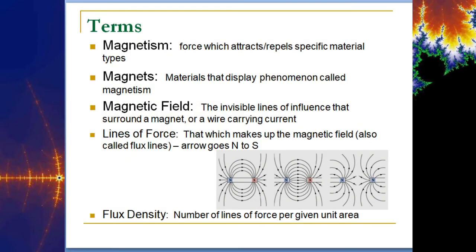Let's get a couple of terms out of the way right off the bat. The first one is magnetism, which is essentially the principle upon which all of these things work. It's a force which attracts or repels specific material types. Magnets are the actual physical materials that display the phenomenon called magnetism.